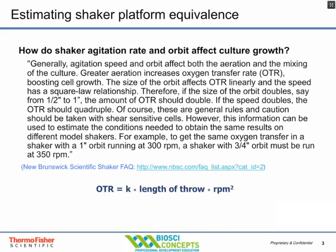Those offsets might be something like a half inch or an inch. But if you look at this equation, the OTR — the oxygen transfer rate — the size of the orbit affects the oxygen transfer rate linearly, and the speed of the orbit has a square law relationship. So if the orbit doubles from a half inch to one inch, the oxygen rate should double.